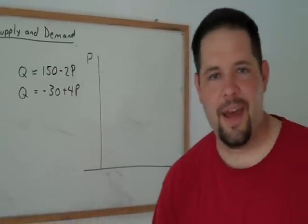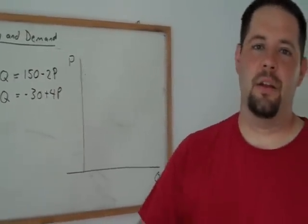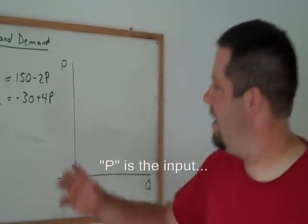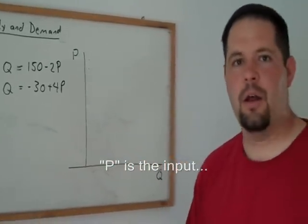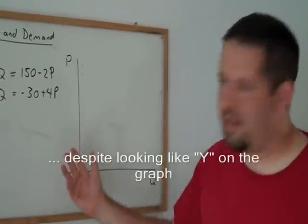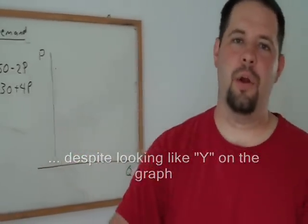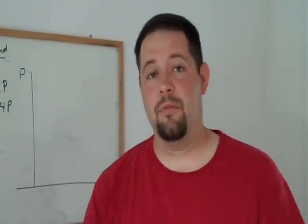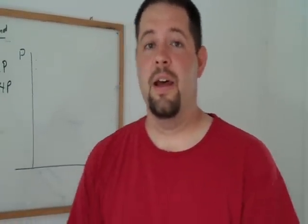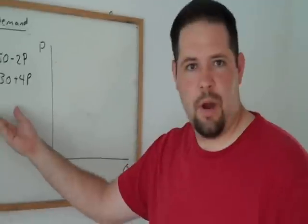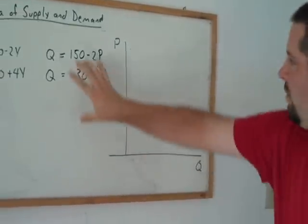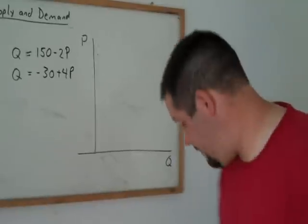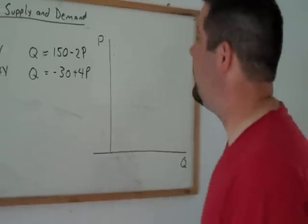Remember, demand and supply is the quantity demanded at a given price. That means that in economics, when we're thinking about these equations, the functional way to look at it is, I give you a price, the demand curve will tell us the quantity. I give you a price, the supply curve will tell us the quantity supplied. And so, we should write it this way. But, when we go to the graph, that's not how we actually graphed. We have to do a little bit of algebra.